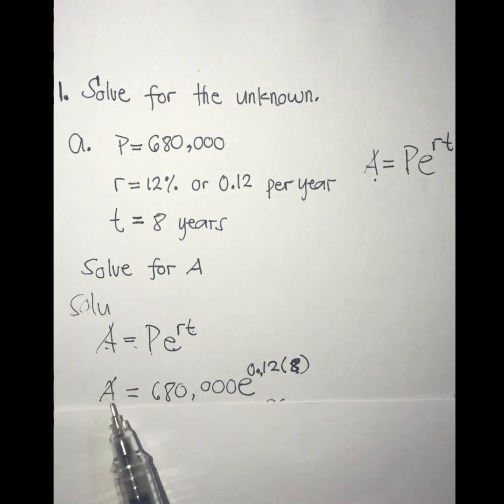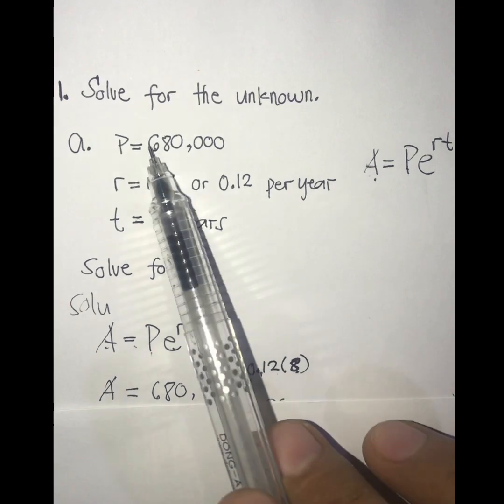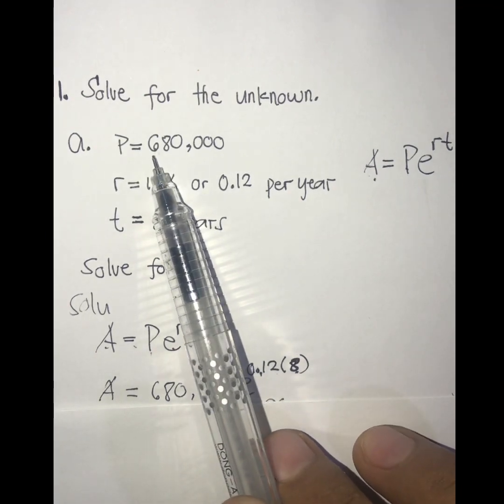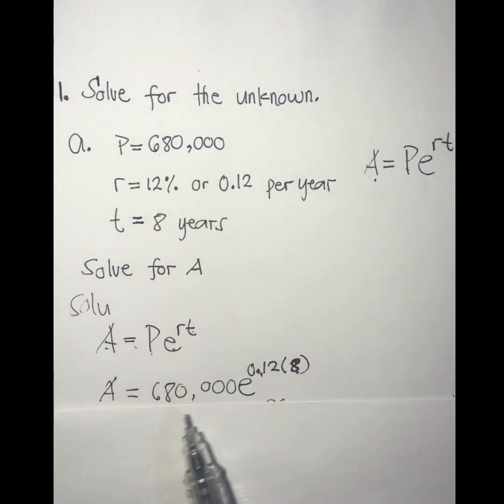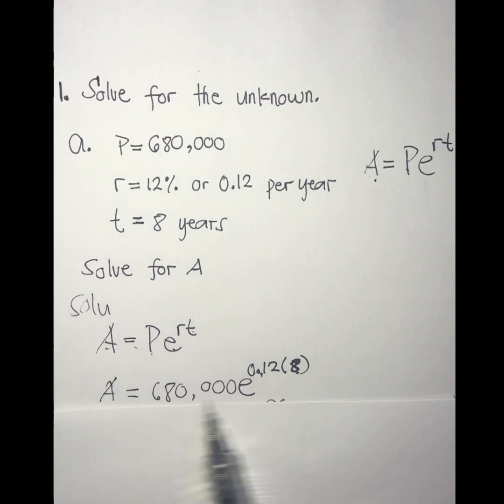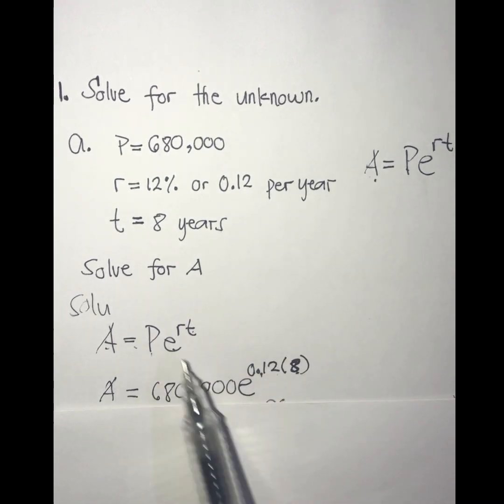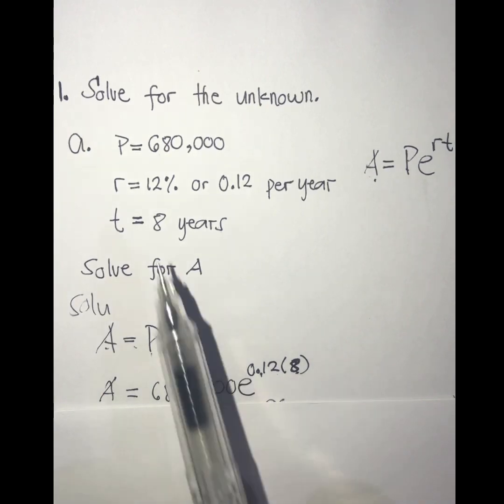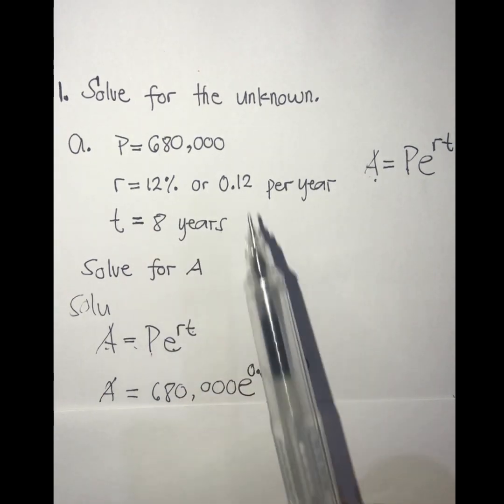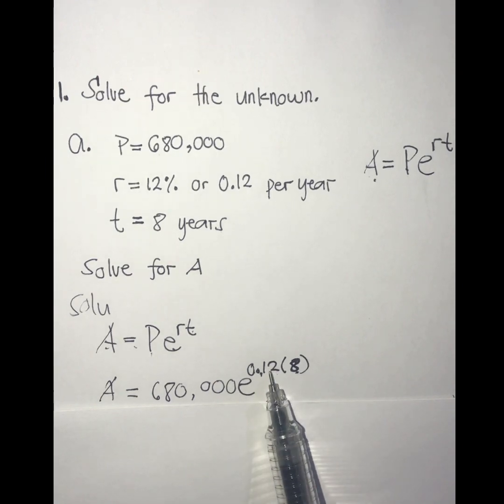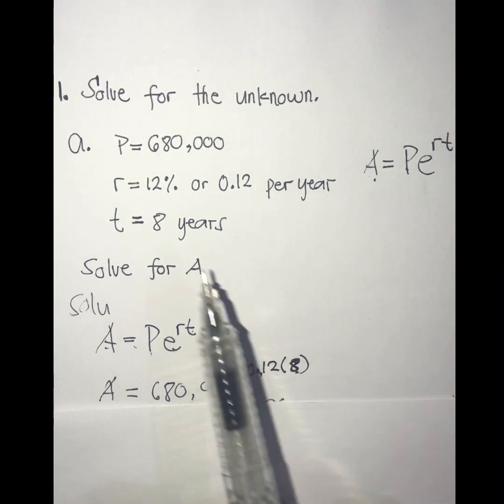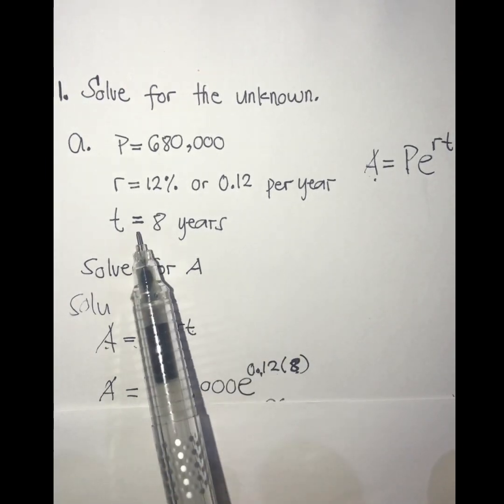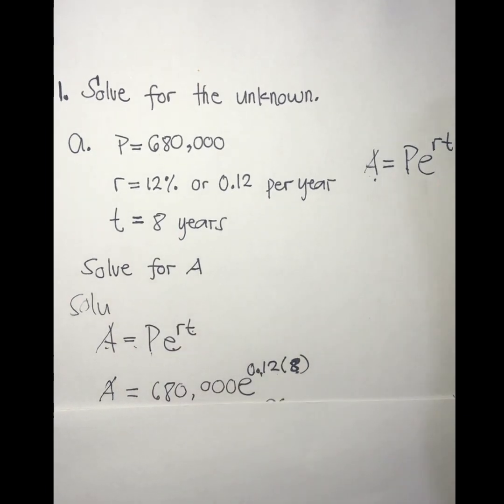Our A is unknown, our P is given here, 680,000, so just simply write here and copy Euler's variable, and then our R, the value of R is 12% or 0.12, simply copy, and our T is 8 years.